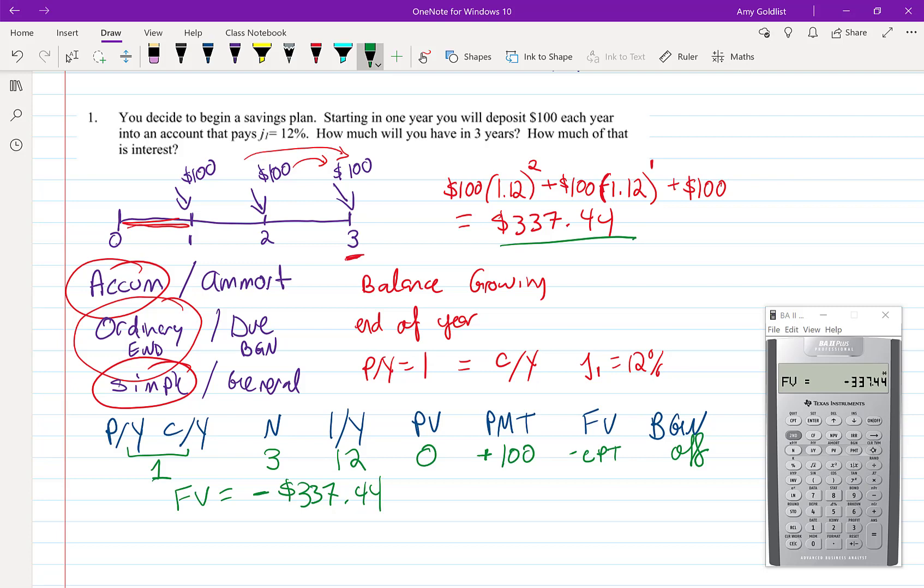Often in an accumulation, present value is going to be zero because we assume that we start with no money. If we had money in our account, we'll deal with that next lesson. It's just a matter of putting a number into PV.